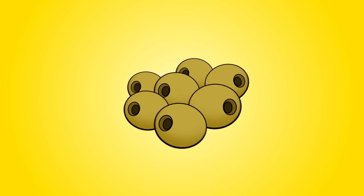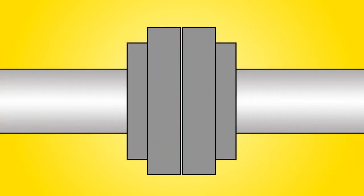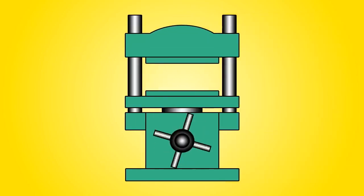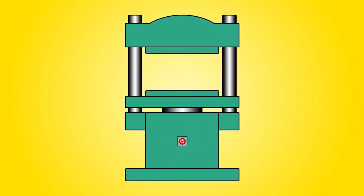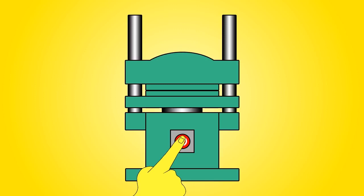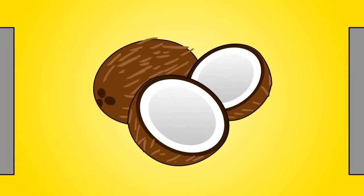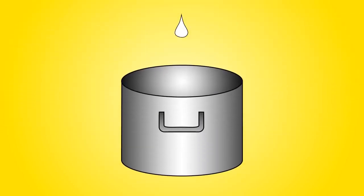This method is also known as cold pressing. The olives are crushed and pressed to squeeze all the oil out. In the past, these heavy machines were operated by humans. Nowadays, most mechanical extraction is done in a factory by machines. Coconut oil is also obtained using this method.